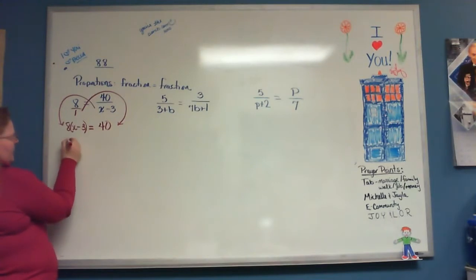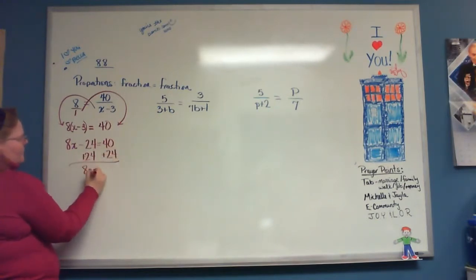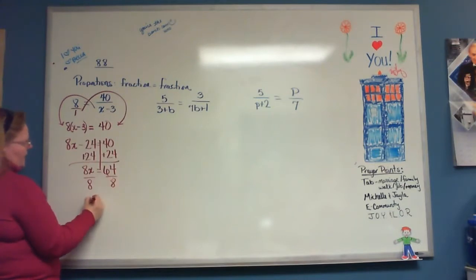So this is going to give me 8x minus 24 is equal to 40. Then I can add 24 to both sides. So 8x is equal to 64. Divide both sides by 8. You get x is equal to 8.